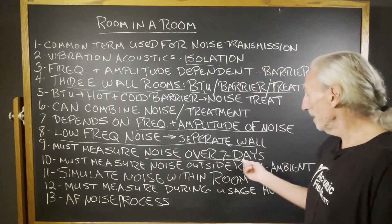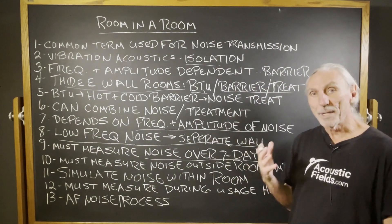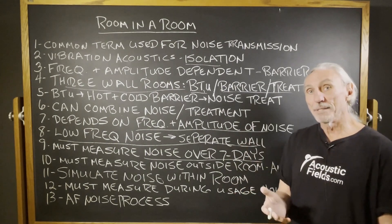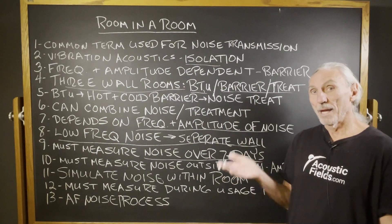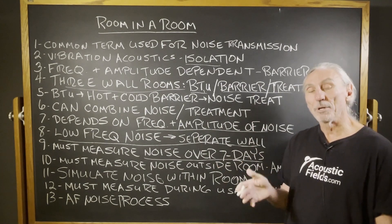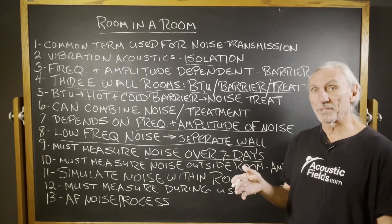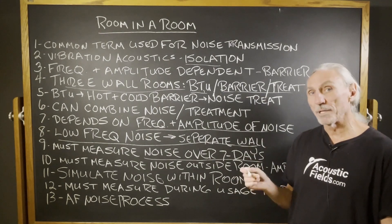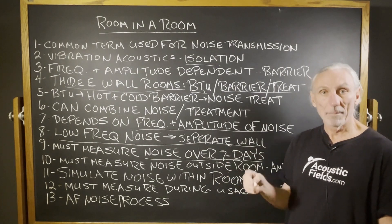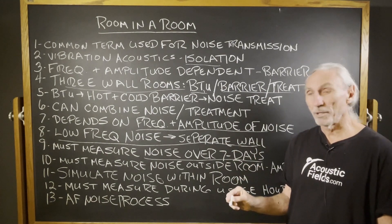We must measure the noise over seven days. People always ask why we have to do it over seven days — it's so we get a complete picture of what's going on, because some days may be louder than others. It's those loud days that will destroy the results. We not only want to measure for the loudest day, but we want to design for the loudest day. We call them mins and maxes — maximum pressure and minimum pressures. We design for the maximum pressure and the minimum pressures fall into place.